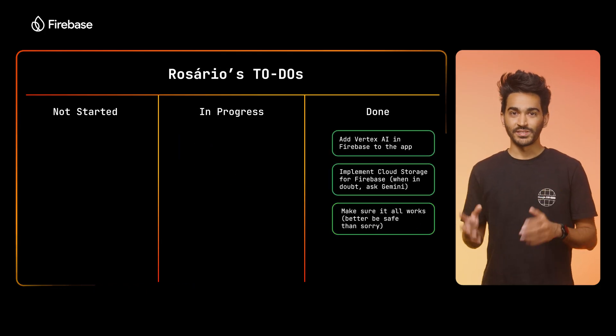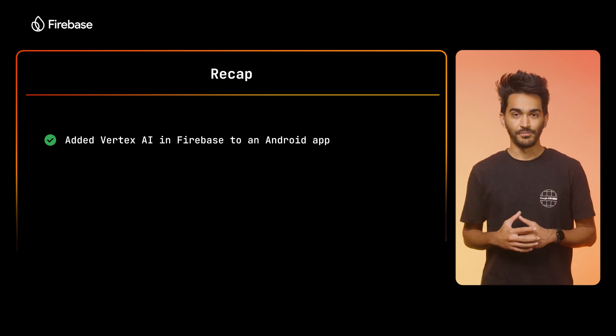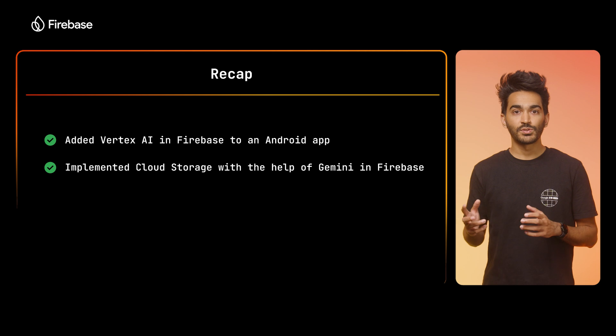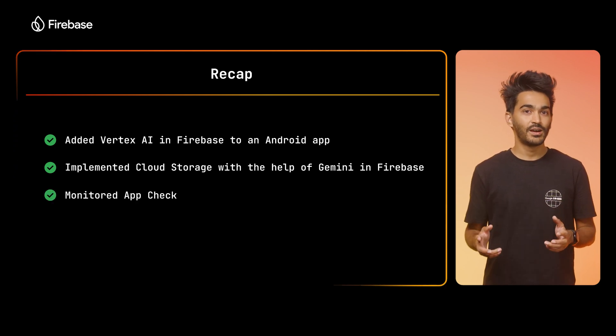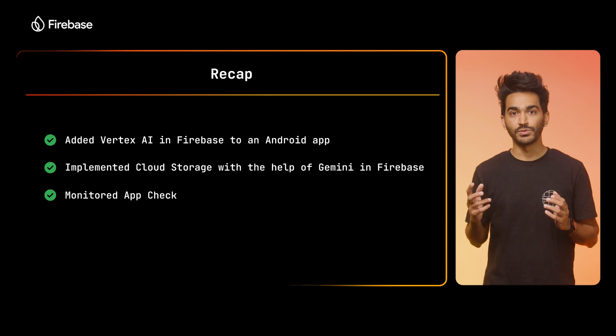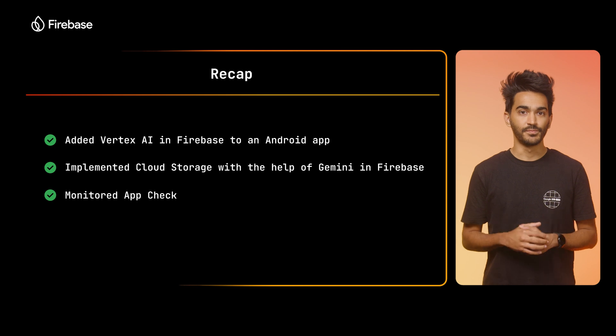As a quick recap: I added Vertex AI in Firebase to the app to make secure calls to Gemini. I implemented Cloud Storage with the assistance of Gemini and Firebase to upload user images. And finally, I ran the app to verify we're able to generate accommodation descriptions based on an image and see the AppCheck requests coming through. I should now push this code for review, and you can also use Vertex AI in your own app — just check out the link in the description.